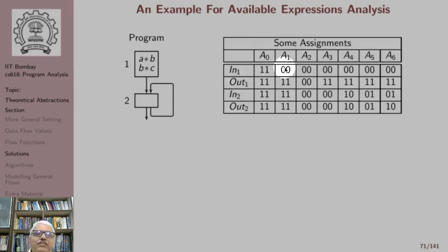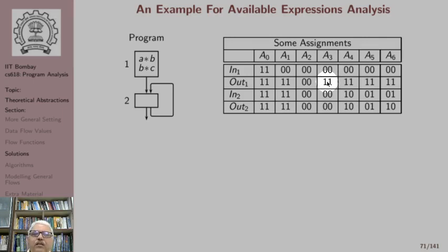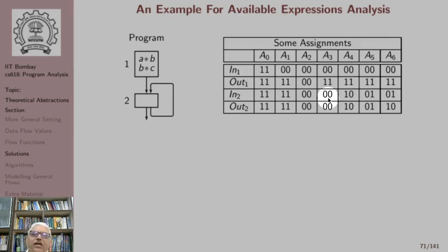Here is another assignment which says at the entry no expression is available, whereas at the remaining three program points all expressions are available. Recall that this is the solution we would like to compute. There is also an assignment which says no expression is available anywhere, and another which says no expression is available at the start but both expressions are available at the exit of node one and none at the exit of node two. An assignment is simply a mapping of data flow values to each program point — this association can be absolutely arbitrary.